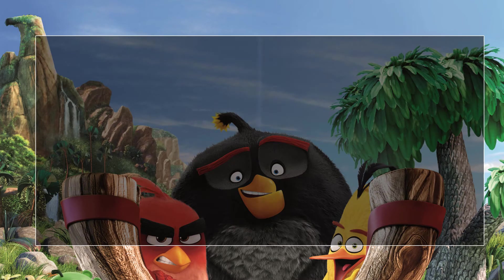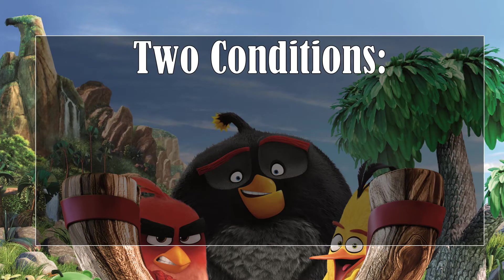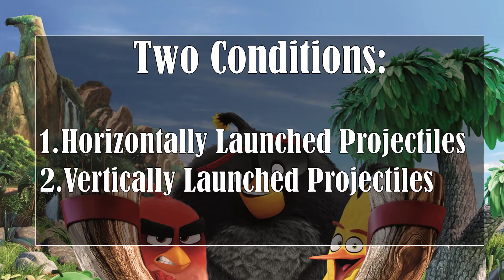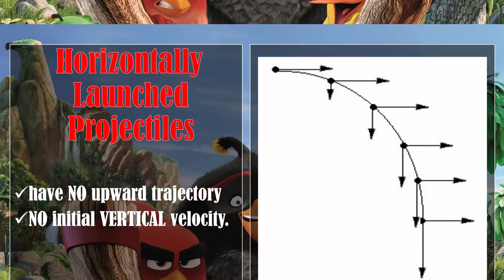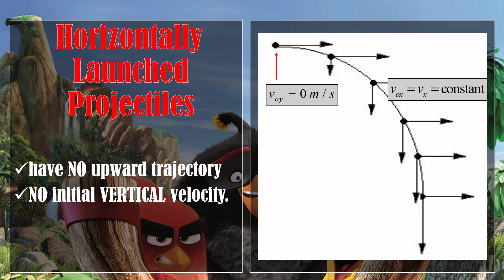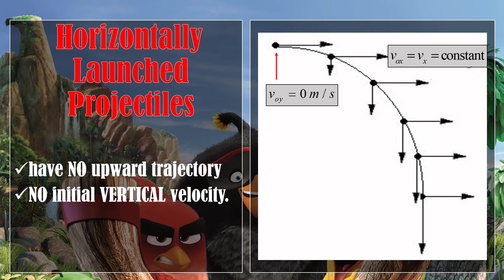There are two conditions in projectile motion: projectile launched at the horizontal, or horizontally-launched projectiles, and projectile launched at an angle, or vertically-launched projectiles. Horizontally-launched projectiles have no upward trajectory and no initial vertical velocity. Therefore, the initial vertical velocity is equal to 0 meters per second, while the initial horizontal velocity is always constant.